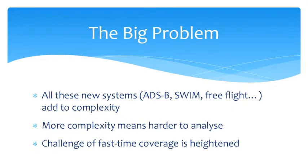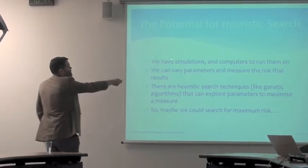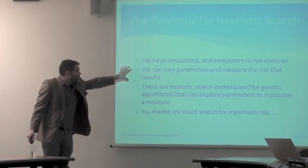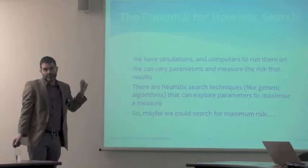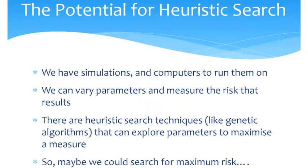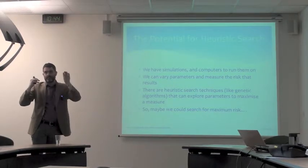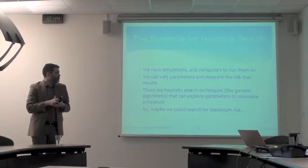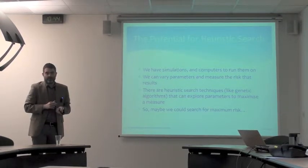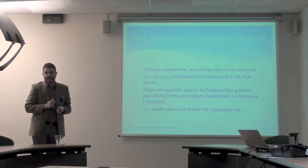The big problem is: how do you know where all those critical regions are in a complex system with a great many states? All these systems are getting more complex, making the analyst's job harder. We know we have simulations and computers to run them; we can vary parameters and calculate risk results. There are heuristic search techniques like genetic algorithms that can take a black-box model and optimize the output — so could we search for maximum risk and find the hot spots that Monte Carlo might have missed?